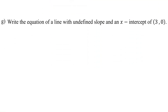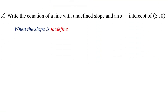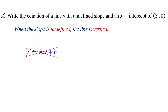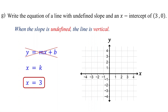Now, what if the slope is undefined? When the slope is undefined, the line is vertical. Vertical lines cannot be written in slope-intercept form. Instead, they are written in the form x equals k, where k is the x-coordinate of the point the line passes through. So for our example, the equation is x equals 3. This means x is always 3, regardless of y. It represents a vertical line crossing the x-axis at 3. Vertical lines do not cross the y-axis, so they do not have a y-intercept — they only cross the x-axis and have an x-intercept.